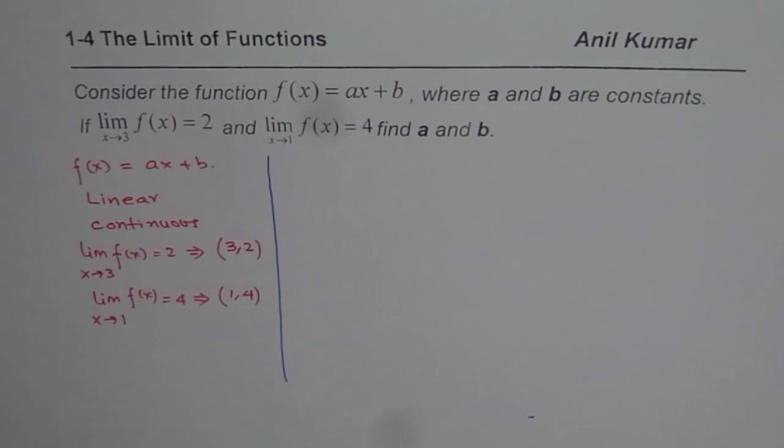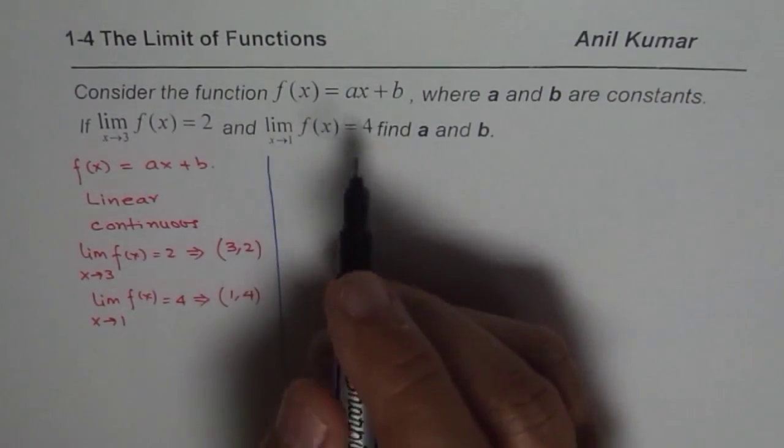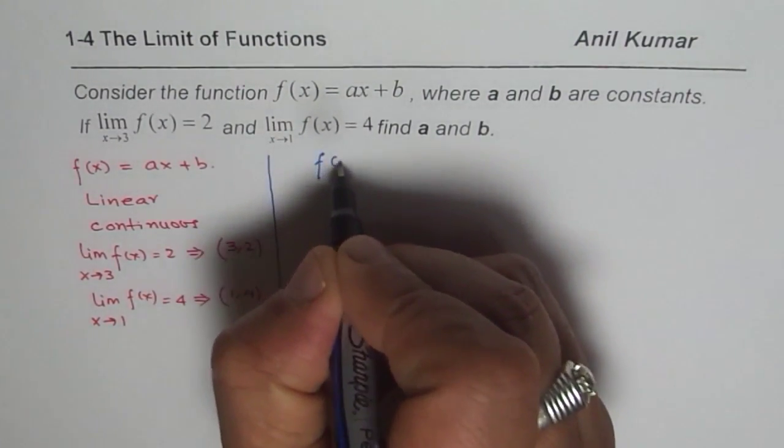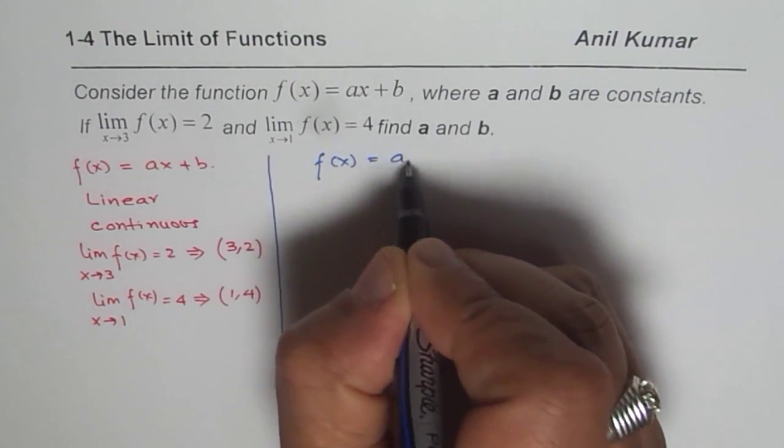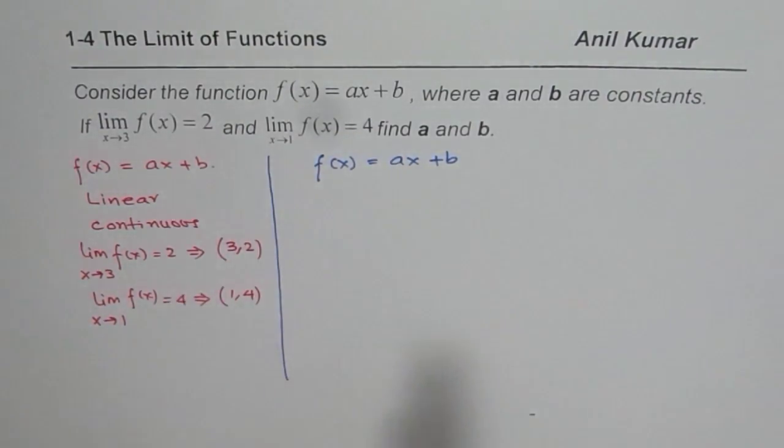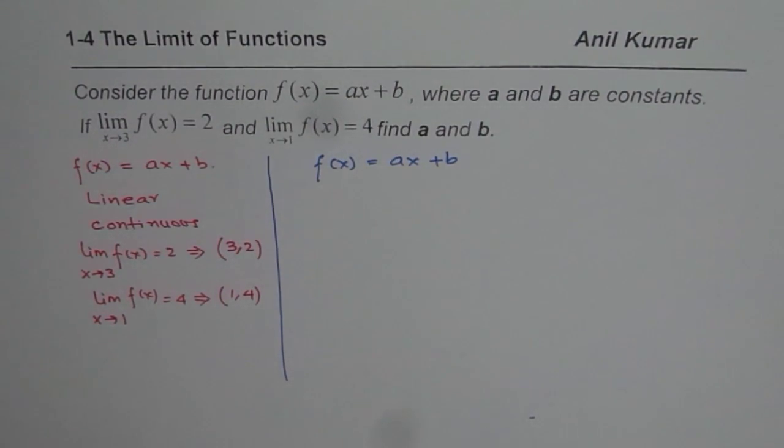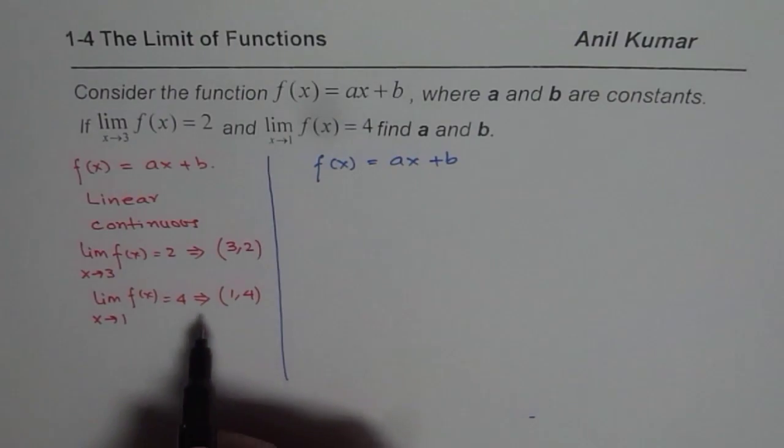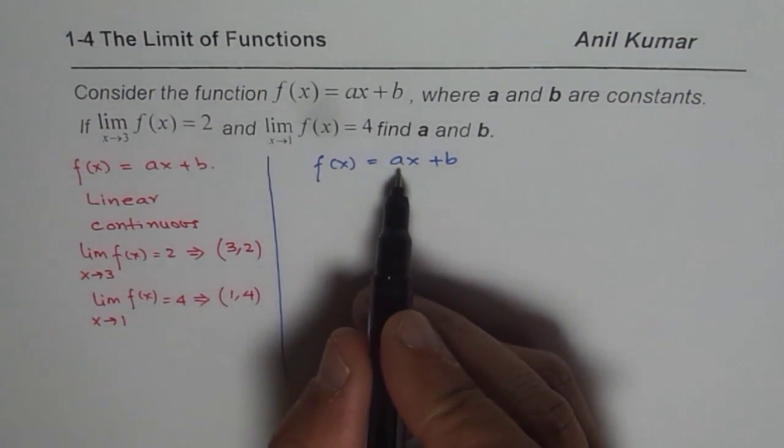Now, with this information, let us solve and find the value of a and b. So again, we are given the function f(x) equals ax plus b. We need to find a and b and we also know that there are two points on it. So what we will do here is substitute these two points and then find a and b.